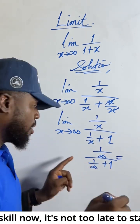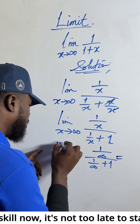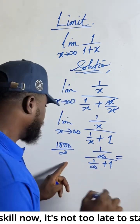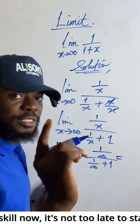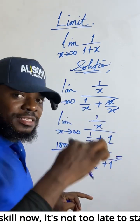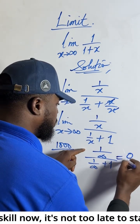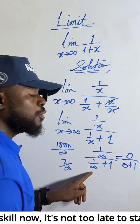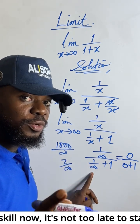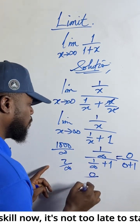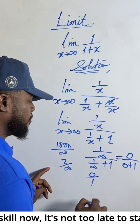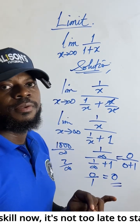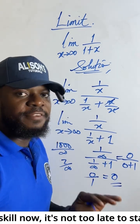Any number — even one thousand — divided by infinity equals zero. So here we get zero. Two divided by infinity also equals zero. So the numerator gives zero, and the denominator gives zero plus one. Zero plus one equals one, not zero. So we get zero divided by one, which equals zero. The answer is zero.